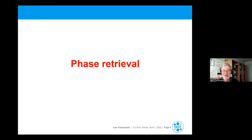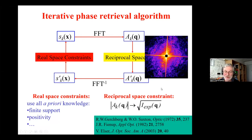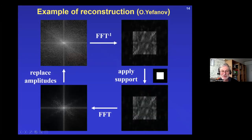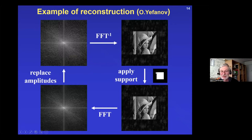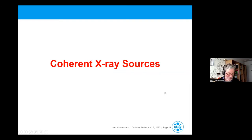For phase retrieval, we typically perform a Fourier transform between real and reciprocal space many times. We apply reciprocal space constraints and real space constraints, which are typically finite support and positivity. On simulated diffraction data this works quite nicely: we start with a diffraction pattern, then add support, and slowly the phase of a nice image emerges with all details visible.